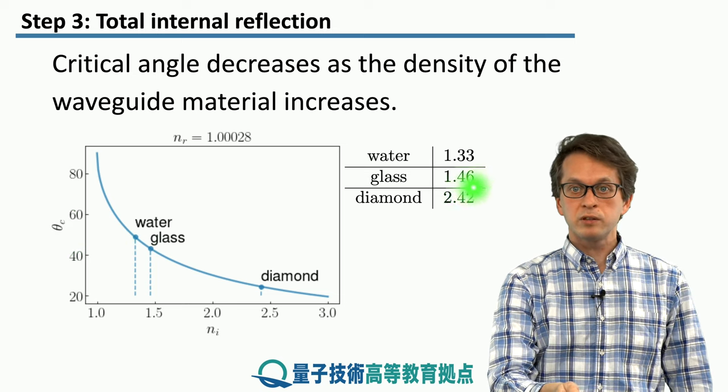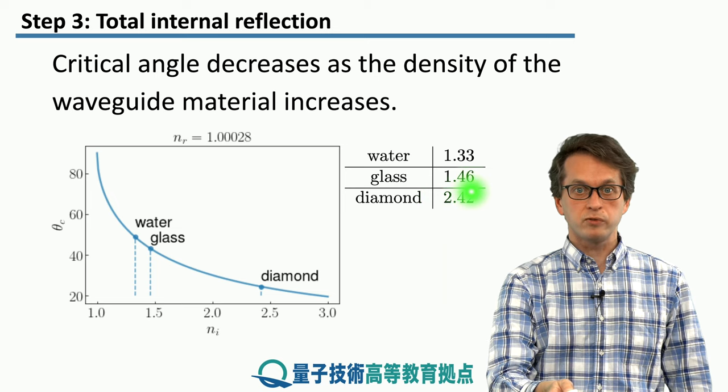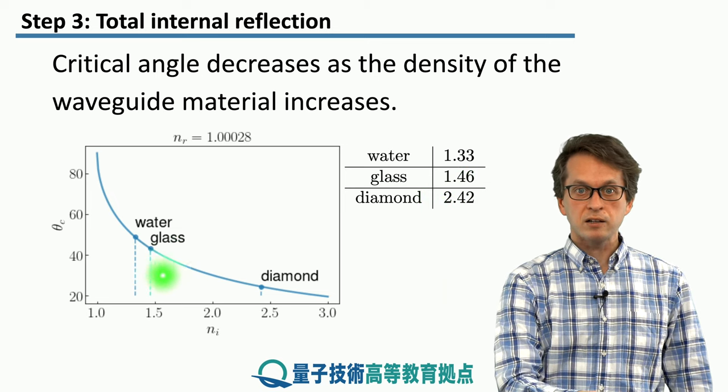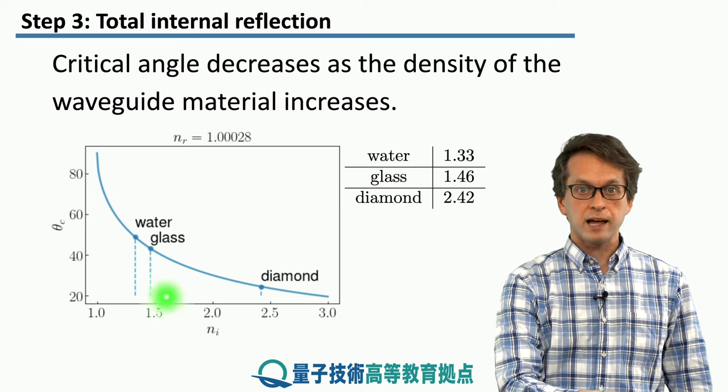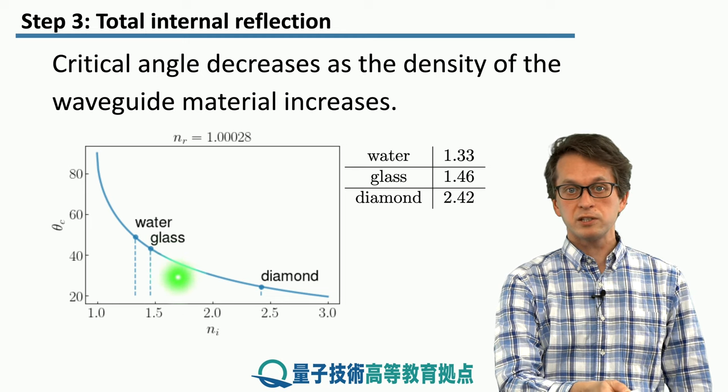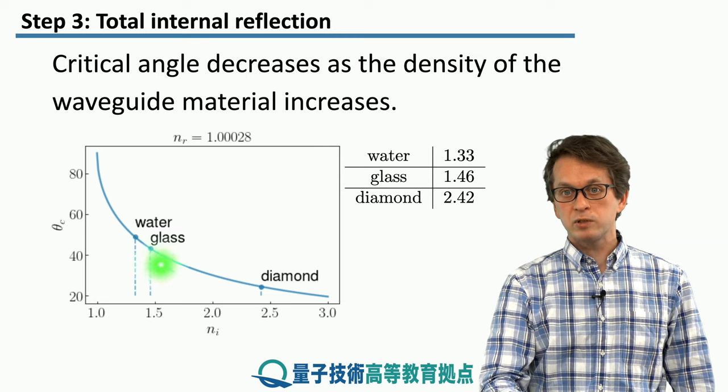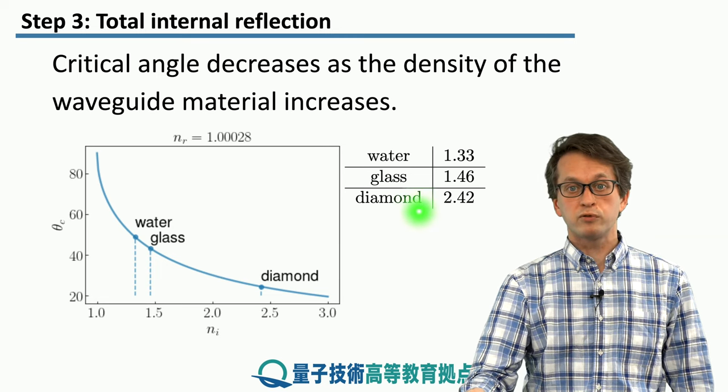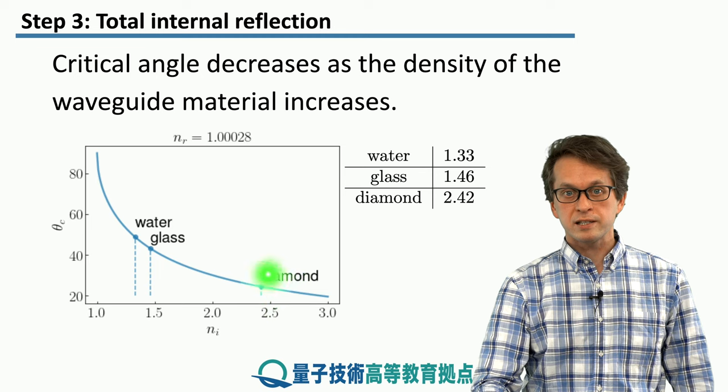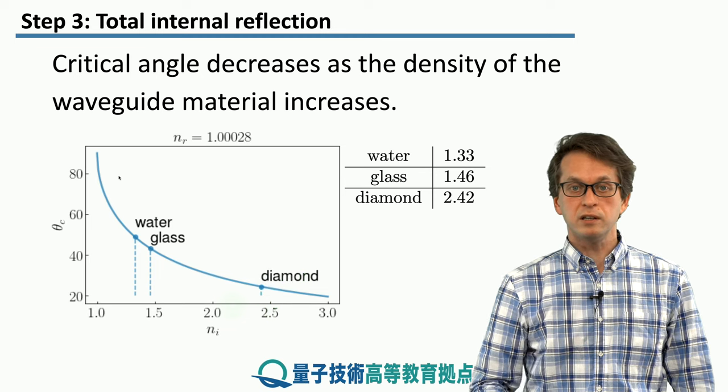Glass is a little bit more dense than water. It has a refractive index of 1.46, and the critical angle beyond which we get total internal reflection is a little bit smaller than water. And for diamond, which has a very large refractive index of 2.42, then the angle is slightly over 20 degrees.